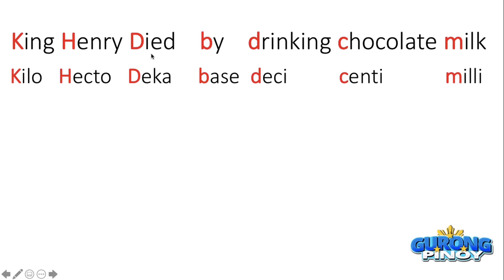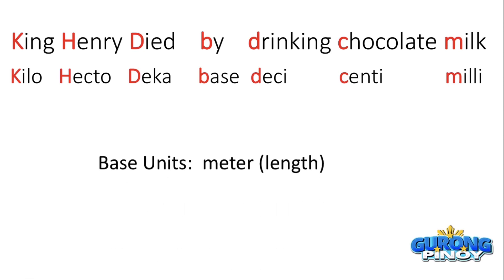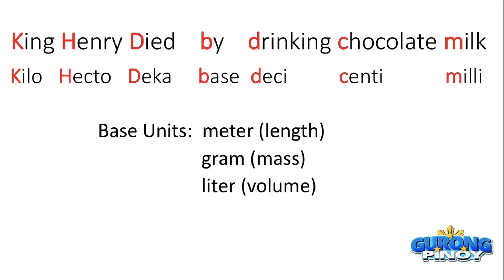The first three words start with capital letters, then we have the base, and the last three words start with small letters. Capital letters represent prefixes bigger than the base unit, while small letters represent prefixes smaller than the base unit. The base units are: meter for length, gram for mass, and liter for volume.